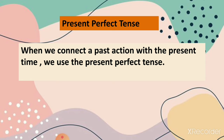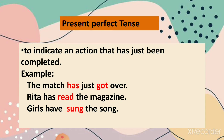When we connect a past action with present time, we use the present perfect tense. Present perfect tense is used to indicate an action that has just been completed. For example: the match has just got over; Rita has read the magazine; girls have sung the song. So here, present perfect tense is used to indicate an action which has just completed.